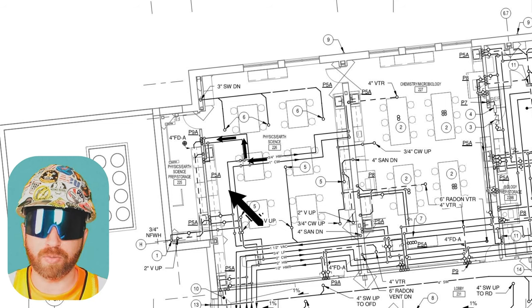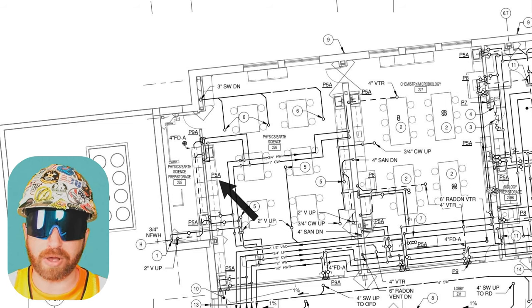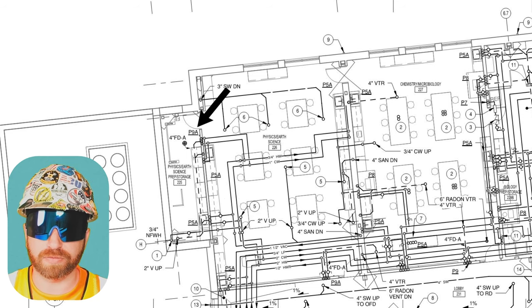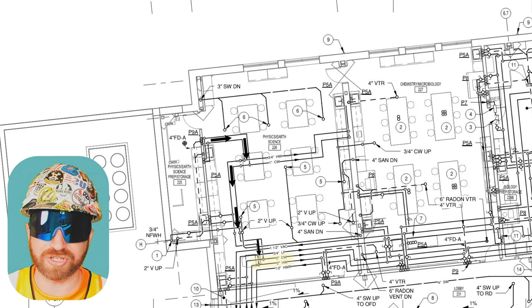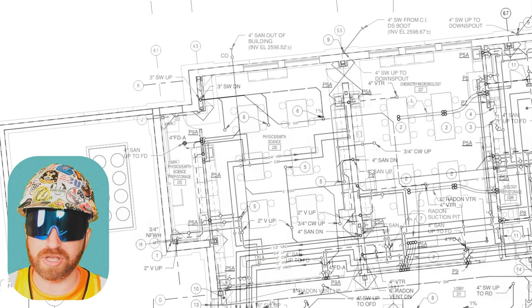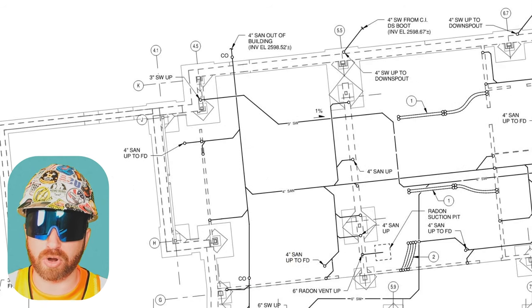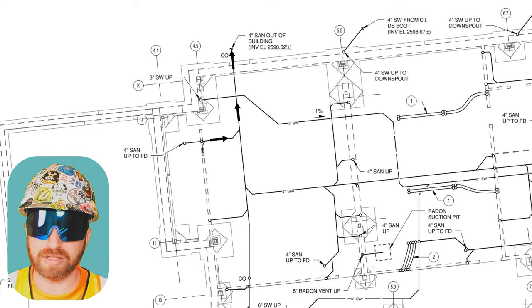Also in this area, we see P-5A which from our fixture chart stood for countersink, and P-9A which stood for eye and face wash. If we just follow these lines, we see that they're fed from a cold water line and a hot water line — CW and HW. If I flip back to the underground drawings, we see that the water drains into our sanitary lines and leaves the building via gravity.